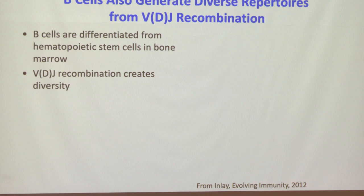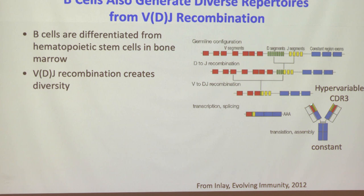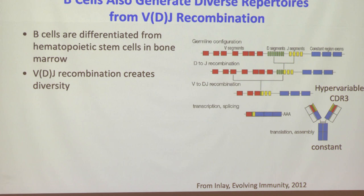B cells also undergo VDJ recombination, and the closest VDJ combination makes an antibody. The Y-shaped antibody has a hypervariable sequence responsible for recognizing different antigens, while the constant region is responsible for signaling different types of immune help — like calling the police, fire station, or ambulance. B cells with the highest affinity against self proteins are eliminated, and remaining circulating B cells are poised to recognize foreign antigens, including mutated sequences in cancer.